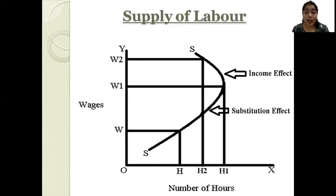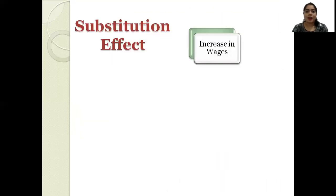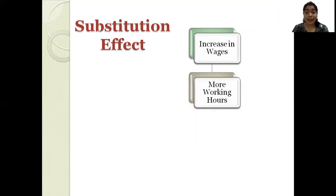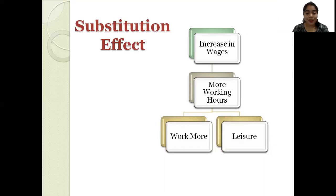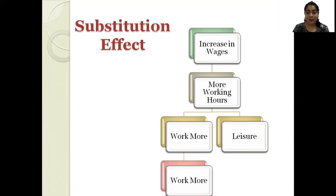Because of this, the supply curve slopes upward to a certain extent due to the substitution effect. An increase in wages creates demand for more working hours, and a worker has two choices: working more or taking leisure. At this stage, higher wages encourage a worker to work more, since working more is more attractive. So the worker wants to work more and earn more money, substituting leisure for work — causing the supply curve to slope upward to a certain point.